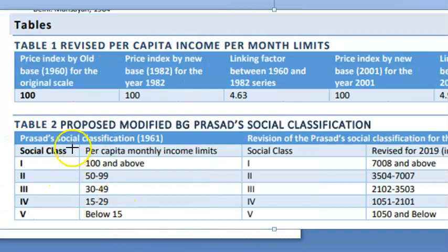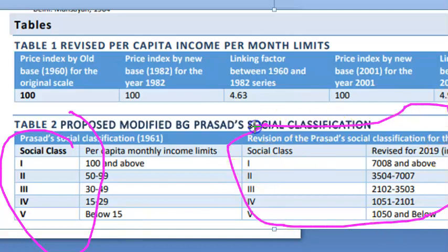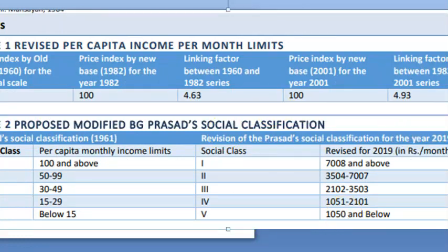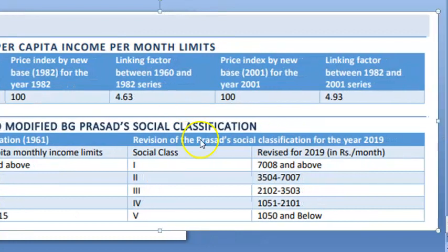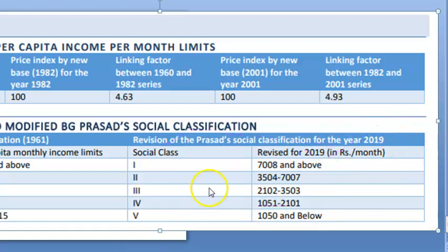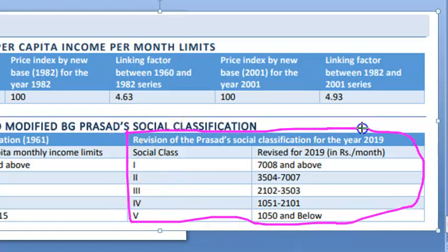So there are five classes. The 2019 revision is the new one we focus on. The value of money keeps changing, which is why they have revised it. So that is why this updated classification has been done.